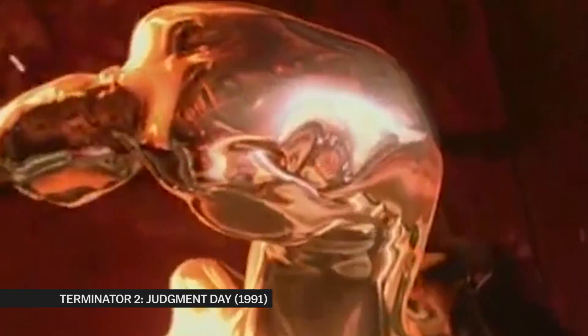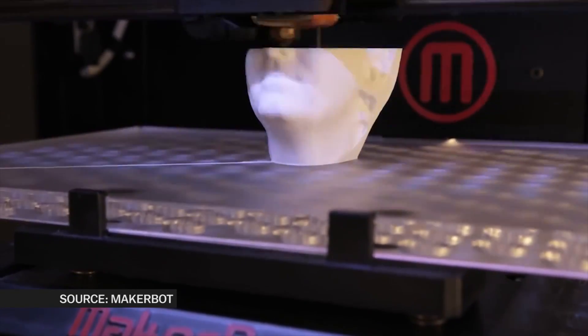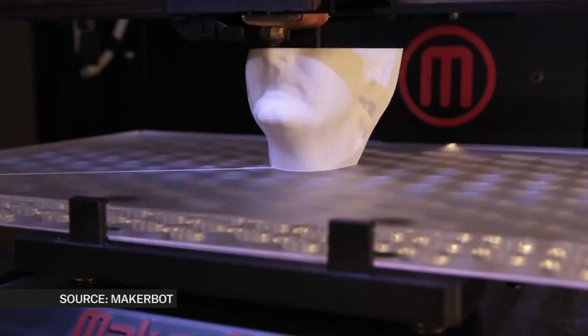Conventional 3D printing involves a printing head that passes over and over across a platform, depositing a thin layer of material each time.